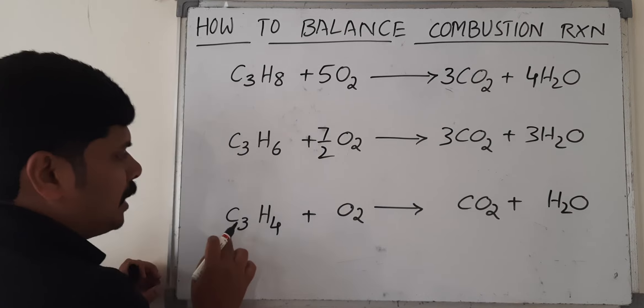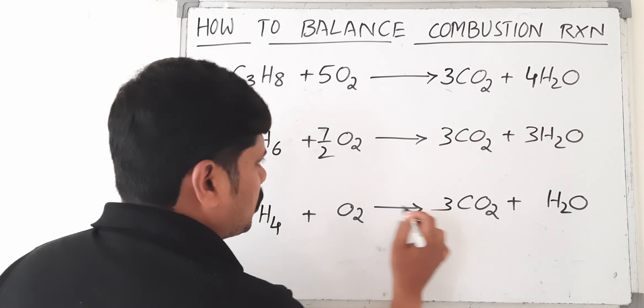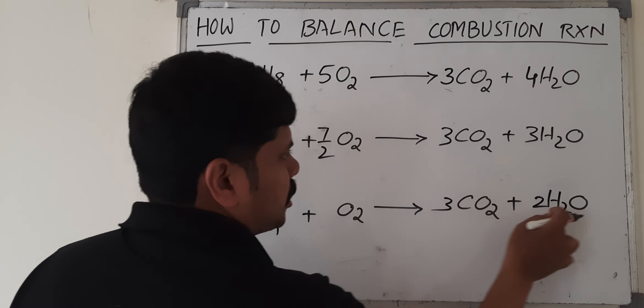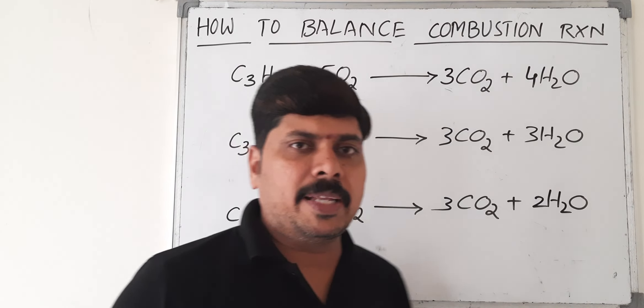C3H4: 3 CO2, 2 H2O. 6 plus 2 is 8, so 4 O2. That's it, very simple.